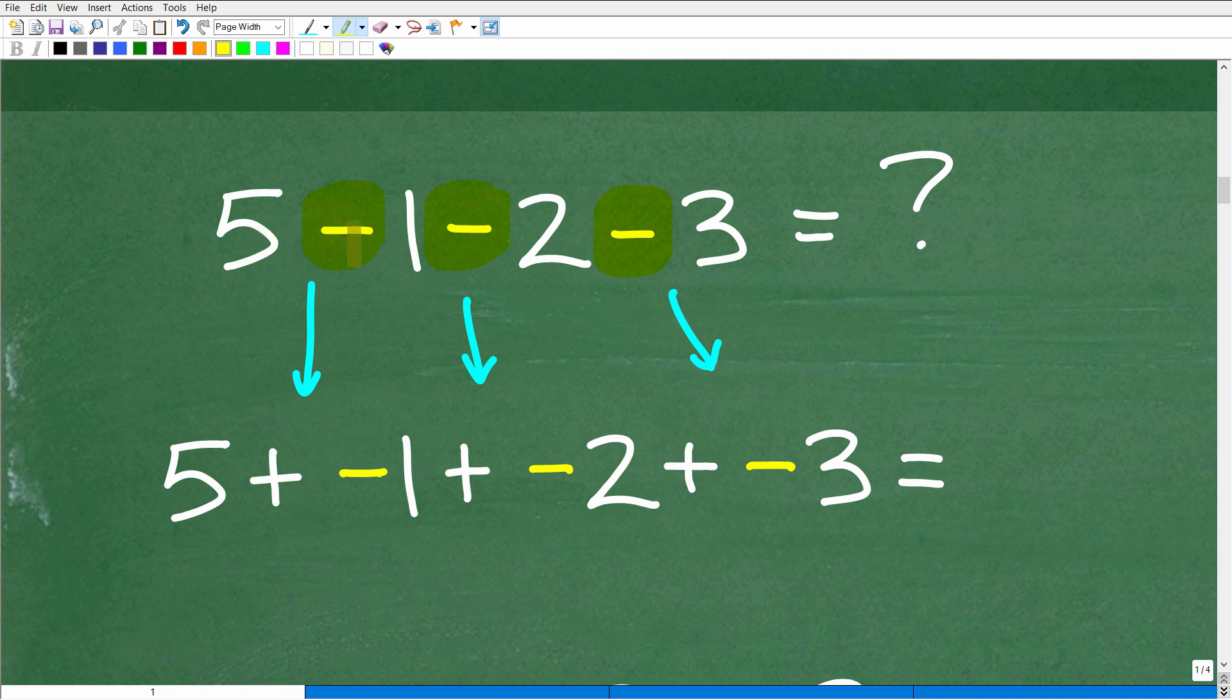So, we have 5 minus 1. So, we'll write this as 5 plus negative 1. Then we have minus 2. So, we'll have this as plus negative 2. And then we have minus 3 or plus negative 3. So, when we look at this, what do we have?